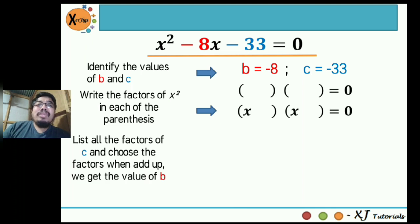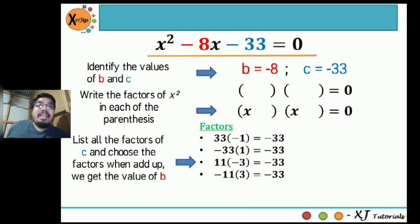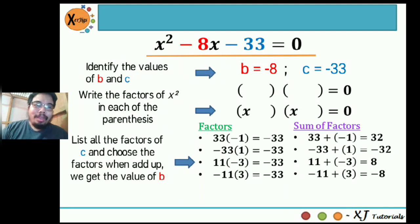Third step: list all the factors of c and choose the factors that when added up give us the value of b. There will be two conditions. The value of c is negative 33 and b is negative 8. The factors of -33 are: 33 and -1; -33 and 1; 11 and -3; -11 and 3. Getting the sums: 33 + (-1) = 32; -33 + 1 = -32; 11 + (-3) = 8; -11 + 3 = -8. The sum we need is negative 8, so the factors are -11 and positive 3.